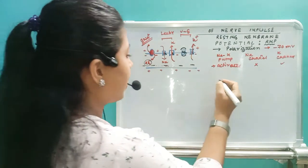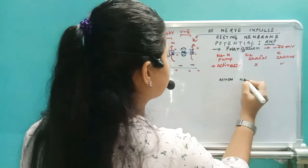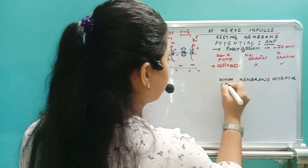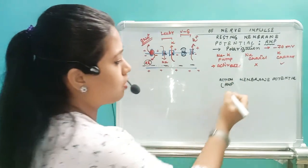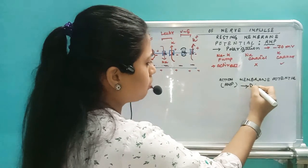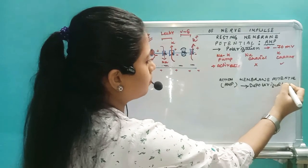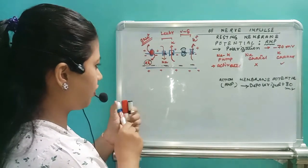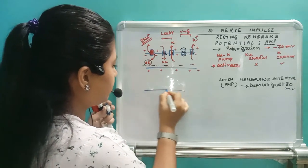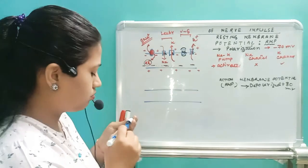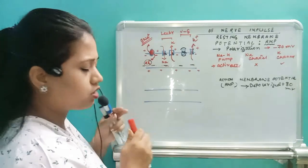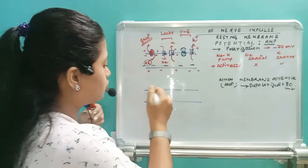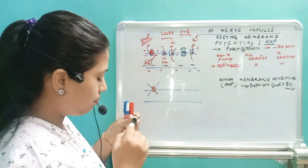Now let's see the action membrane potential — also called AMP or the depolarized state. In the depolarized state, we develop a charge of plus 30 millivolt inside the neuron. In the ICF, the sodium-potassium pump is suddenly deactivated. The sodium leaky channels are still working and sodium ion keeps entering. At one point, the concentration of sodium ion increases in the ICF, causing the opening of sodium ion voltage-gated channels.